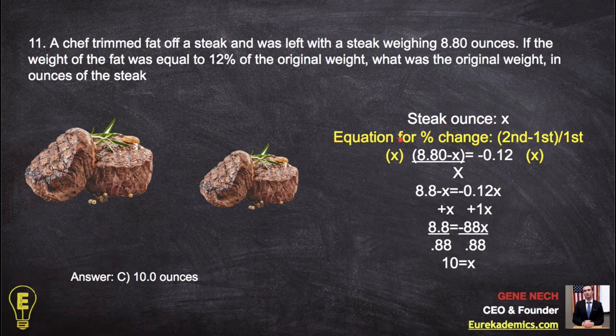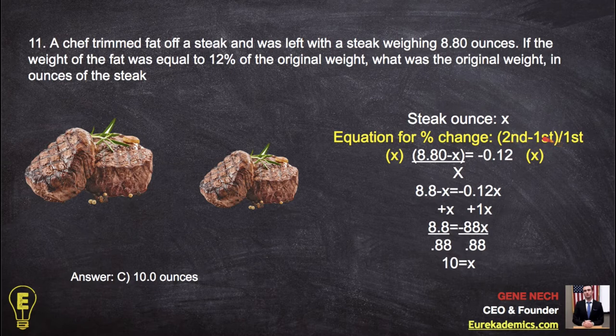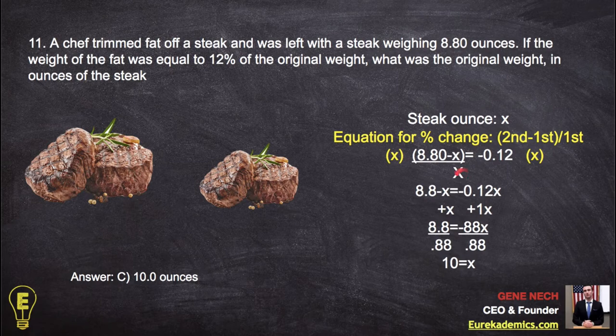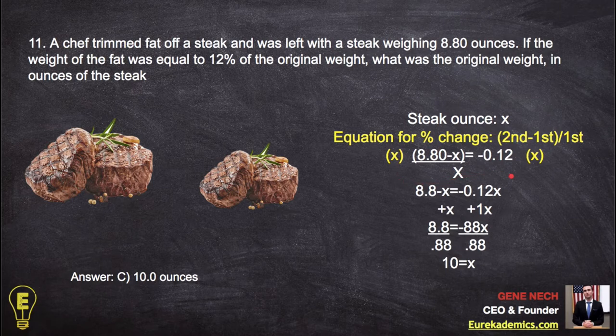Now you need to know this equation for percent of change, and I'm going to give you homework on that. Second minus first divided by first, and an easy way to remember it is 2, 1, 1. Second minus first divided by first. So we're going to take this second steak, which is 8.8, minus the first steak, which is x, divided by x itself, which is the first steak, should equal negative .12, because that describes the amount of fat that was burned off, or the amount of mass that the steak lost.